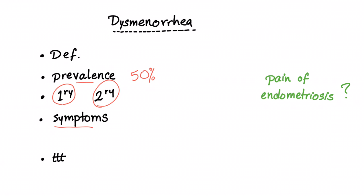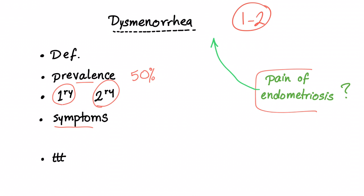Symptoms of dysmenorrhea: not just pelvic pain, but also nausea, vomiting, and headache. There is a difference between the pain of dysmenorrhea and the pain of endometriosis. The pain of dysmenorrhea usually occurs on the first or second day of menses. However, the pain of endometriosis occurs one or two days before menses. So during menses — first or second day — that's dysmenorrhea. Before menses, that's endometriosis.